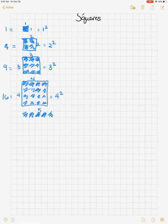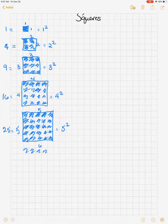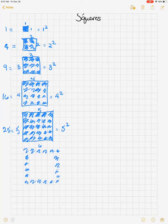And then we have 5 by 5 squares. 25 is 5 squared. 6 squared is 36.